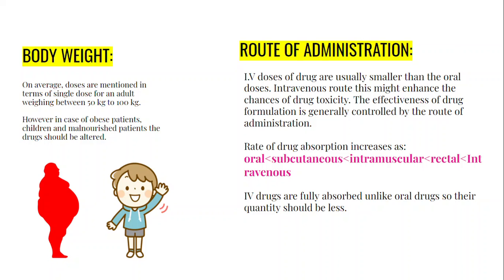The next factor is route of administration. IV doses of a drug are usually smaller than oral doses. Some drugs are administered orally and some intravenously. The intravenous route may enhance the chance of drug toxicity because the rate of drug absorption increases in this order: oral, subcutaneous, intramuscular, rectal, and intravenous — so intravenous has the highest absorption. IV drugs are fully absorbed, unlike oral drugs, so their quantity should be less.